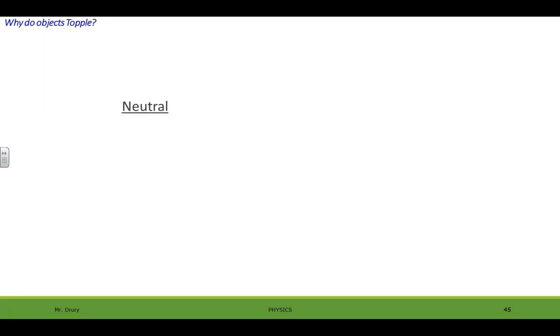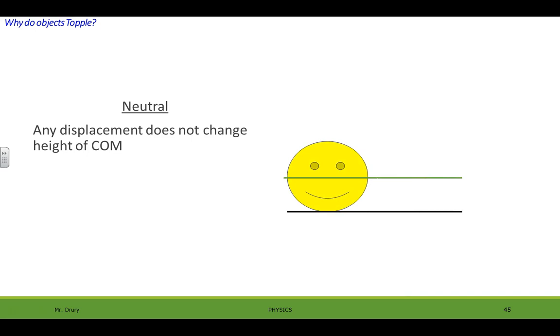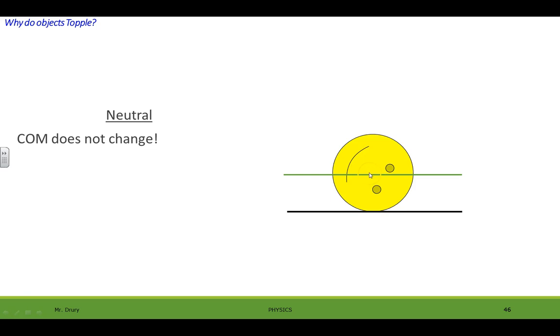Now here's a neutral equilibrium. Any displacement does not change the height of the center of mass. So here again we have a round object. The green line represents the center of mass. And if we roll it, it's still right through the center. So the center of mass neither goes up nor down, so it's a neutral equilibrium.